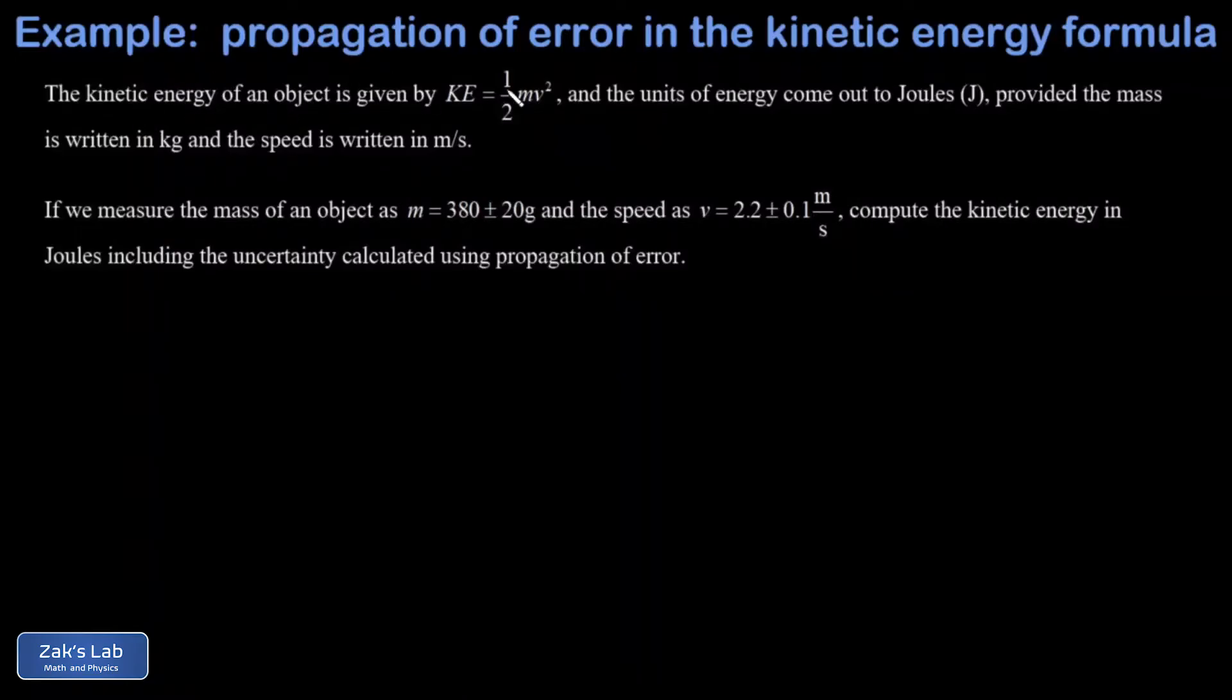In this problem, we're told the kinetic energy of an object can be given by this formula: KE = ½mv². The units of that come out to Joules, provided the mass is written in kilograms and the speed is written in meters per second.